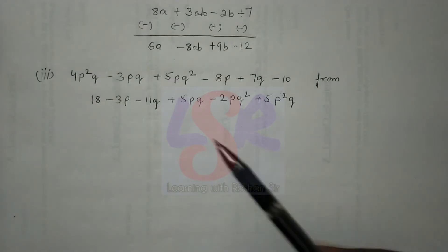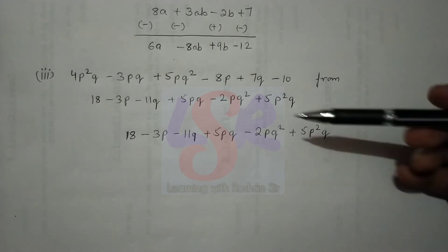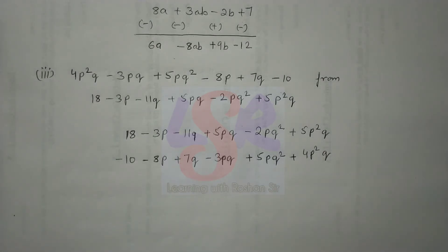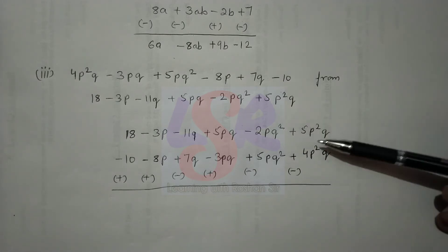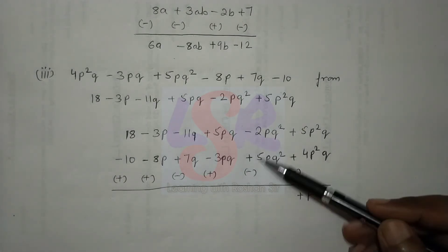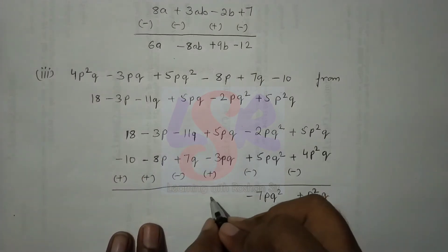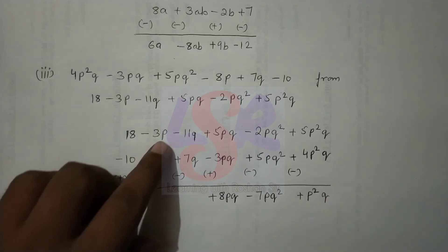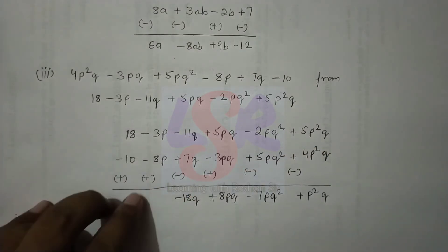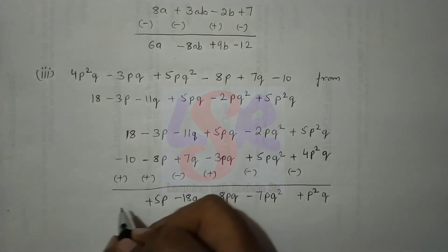For the third part of question 5, we write the first expression and copy the second with like terms aligned. After changing all the signs of the second expression and solving: 5 minus 4 equals 1; both terms are minus, so 2 and 5 add to give minus 7; then 5 and 3 give plus 8pq; both are minus so it becomes minus 18q; minus and plus gives plus 5p; and the last terms have the same sign, giving 28 as the answer.